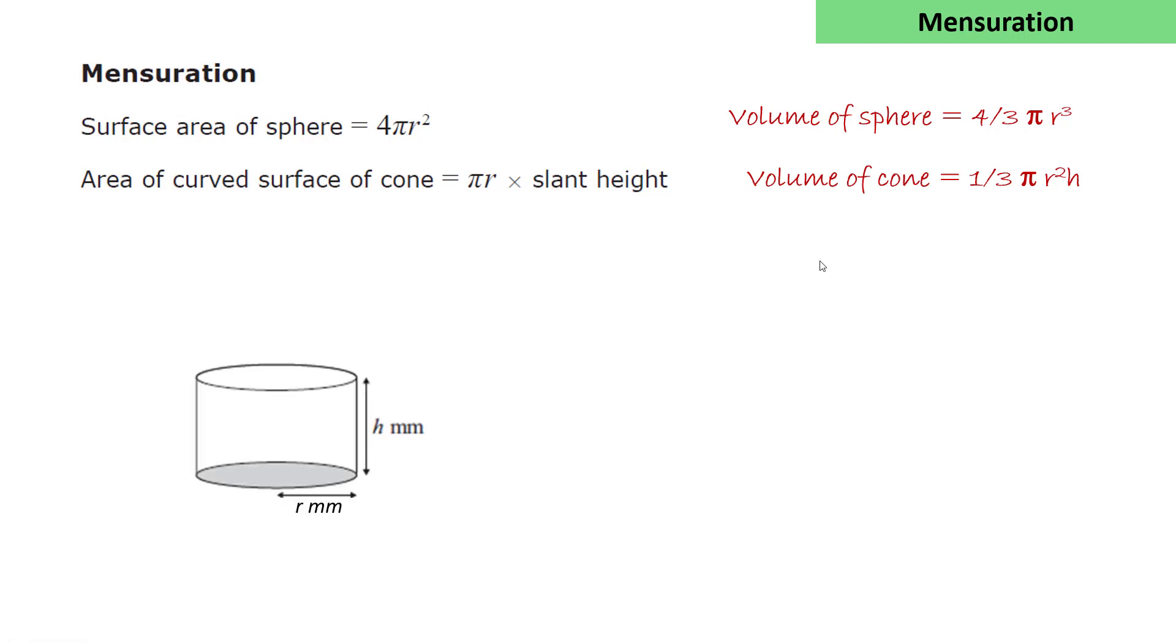The other formulas you need to know are related to a cylinder. The curved surface area of the cylinder is 2πrh, so that's a rectangle. That is 2πr, the circumference of the base wide and h high. And the volume of the cylinder, πr²h, area of the base times the height.